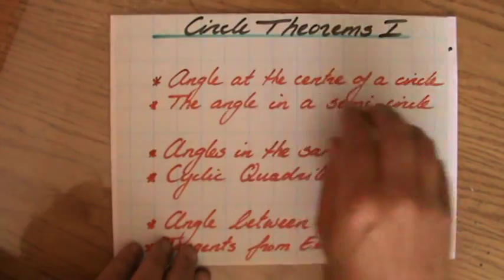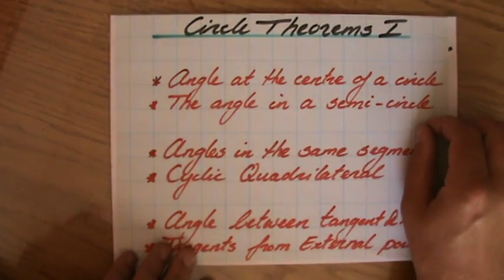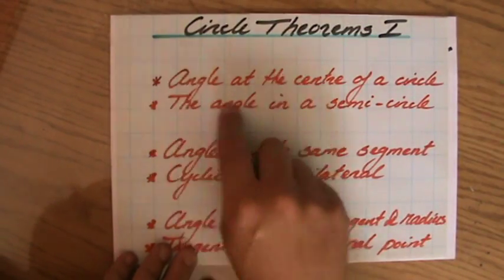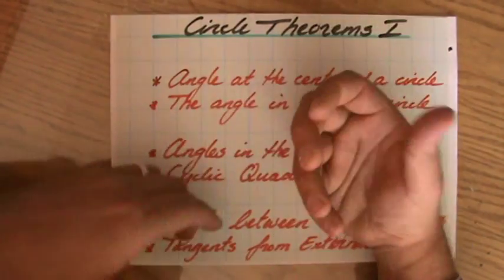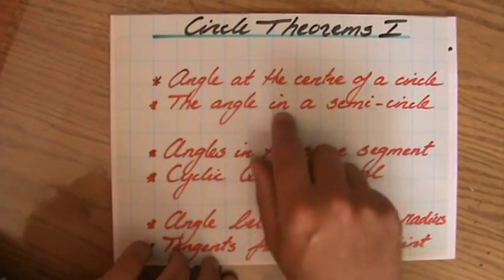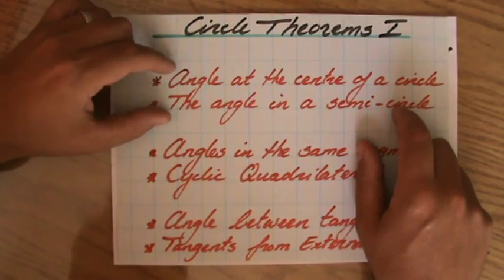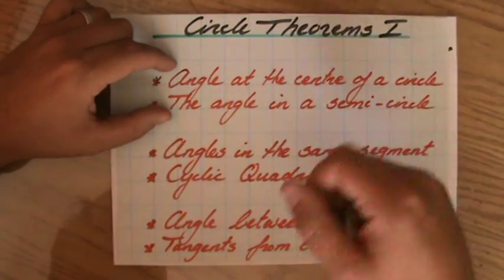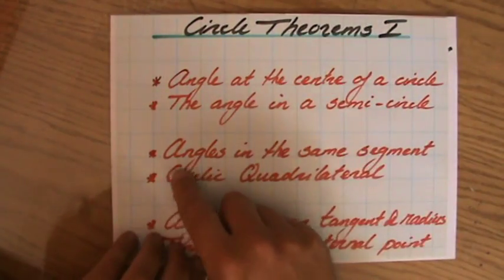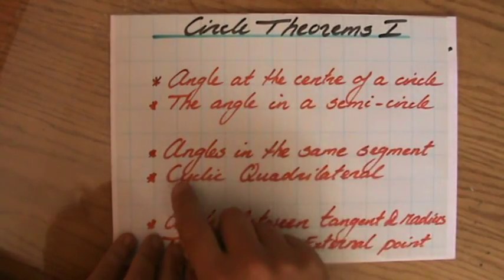Because the first circle theorem you need to know is angles at the center of a circle and actually the same theorem but always separately explained in a textbook is the angle in a semicircle. So that's actually only one theorem and I'll show you later why. And then you need to know angles in the same segment and a cyclic quadrilateral.